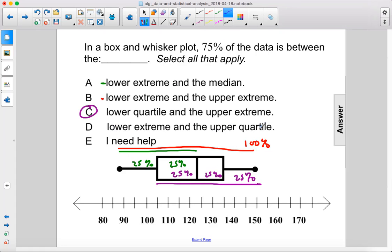And finally, we have the lower extreme and the upper quartile, so from here to here. And look, that's also 25%, 25%, and 25%, so D is also correct. The answer is C and D.